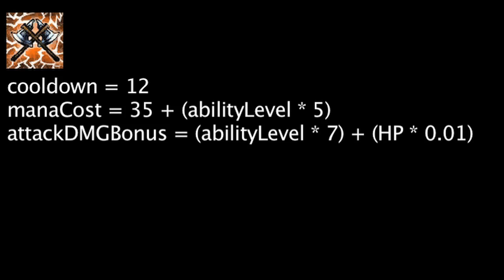Vicious Strikes has a 12 second cooldown and costs mana equal to 35 plus the ability's current level times 5. When cast, it will increase Olaf's attack damage by the ability's current level times 7 plus Olaf's health times 0.01 for 6 seconds.